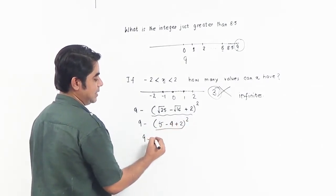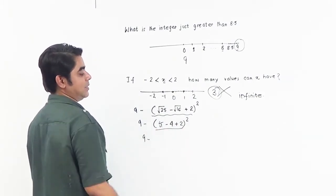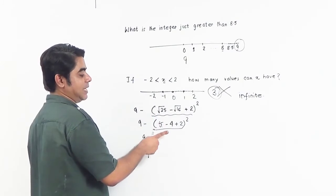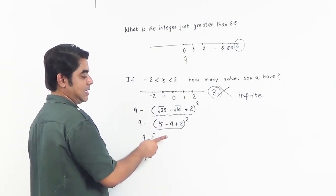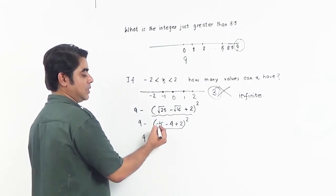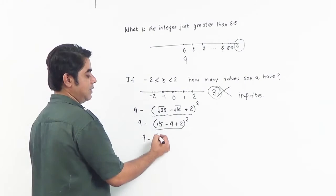Now we concentrate on the bracket. In the bracket, apply BODMAS rule. There is no division, no multiplication, but we do have additions. So first do the additions. 5 has no sign, so we assume it has a plus sign. 5 and 2, when we add them, this gives us 7.